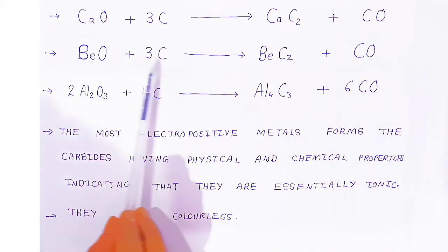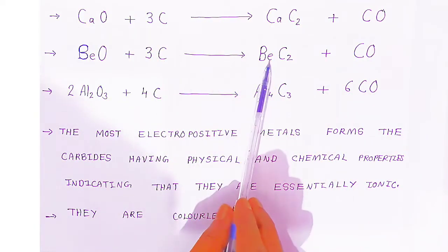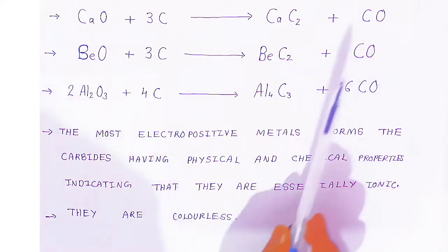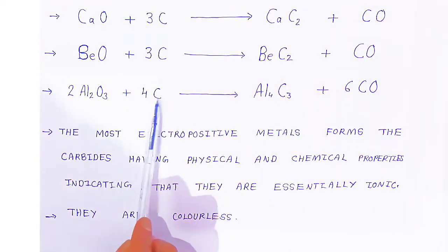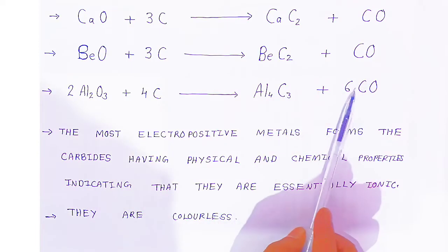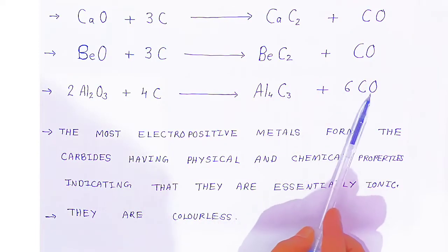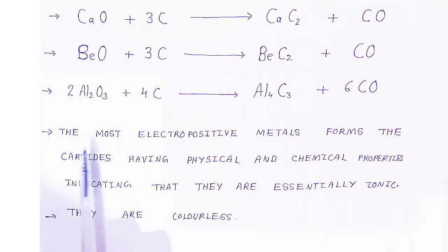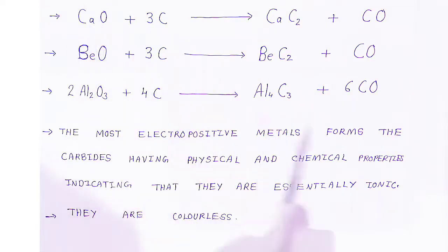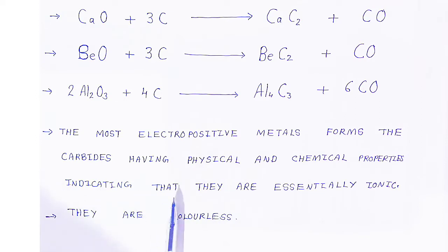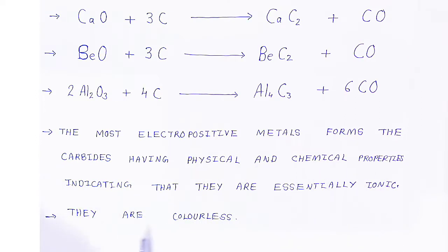Beryllium oxide reacts with carbon to give beryllium carbide (Be₂C) and carbon monoxide. Aluminium oxide reacts with carbon to form aluminium carbide (Al₄C₃) and six molecules of carbon monoxide. These more electropositive metals form carbides with physical and chemical properties indicating they are essentially ionic. They are all colorless.